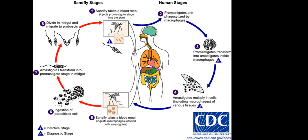For cutaneous leishmaniasis (L. tropica), the sand fly is Phlebotomus papatasi. For visceral leishmaniasis (L. donovani), it is Phlebotomus argentipes. For mucocutaneous leishmaniasis (L. braziliensis), it is Lutzomyia. When the sand fly feeds, it first injects an anticoagulant material to allow blood flow through the proboscis, along with the infective promastigote.